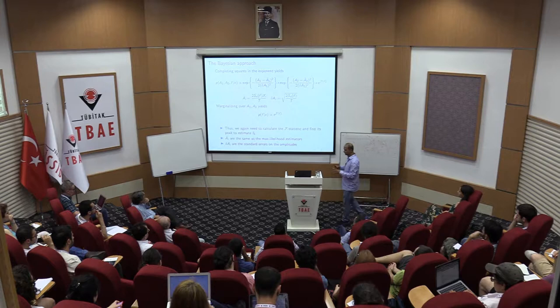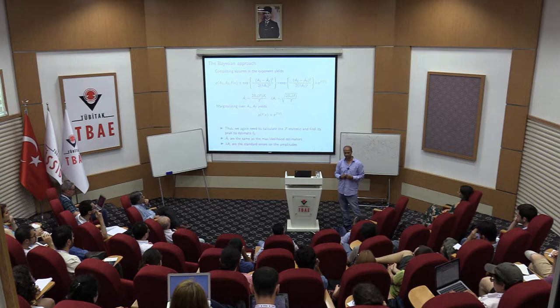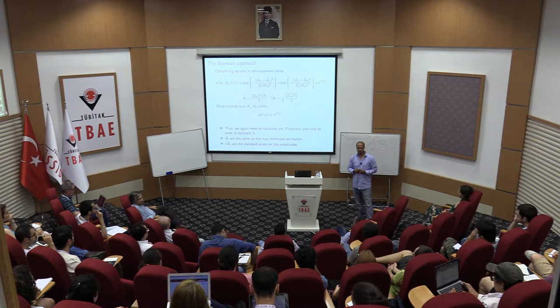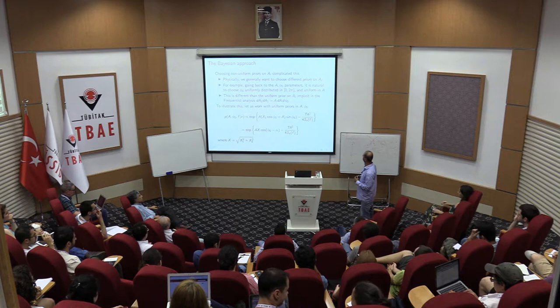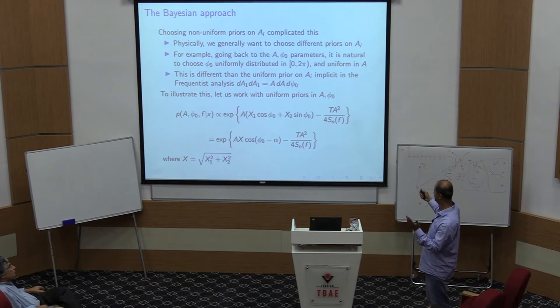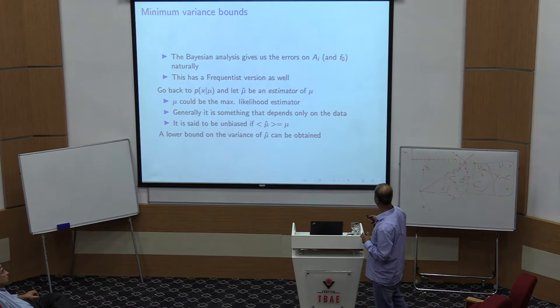So the procedure is clear for this very simple model. Both frequentist and Bayesian frameworks lead to computing the f-statistic. If the priors on frequency are not uniform, it becomes more complicated, but we won't go into that detail here.